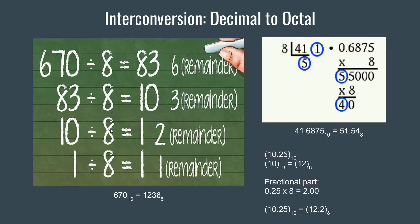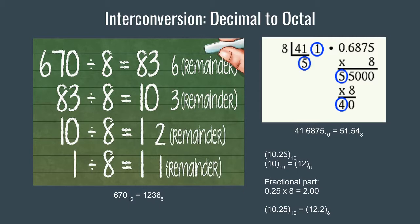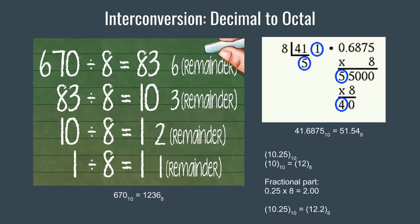Now we divide 10 by 8 to get 1 as quotient and 2 as remainder. Then 1 divided by 8 will give 1 as remainder. The bottom-most number will be placed at the left-hand side and then we move on to the top. So the bottom-most number here is 1, and we place it on the leftmost side.